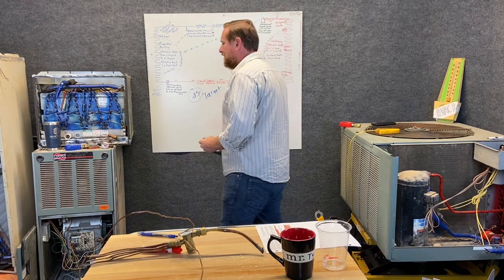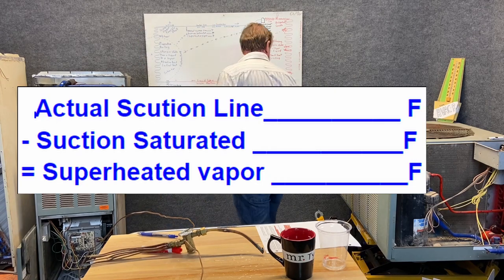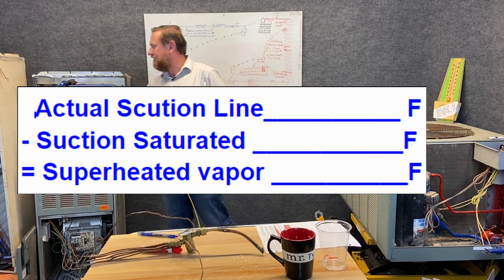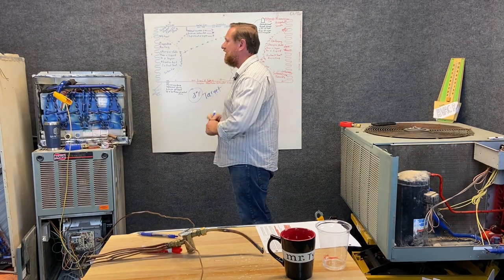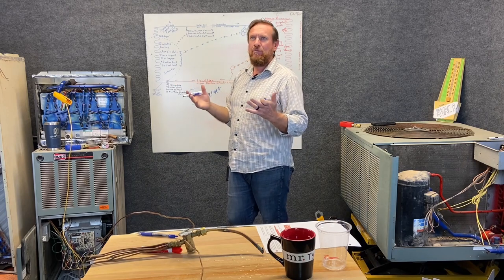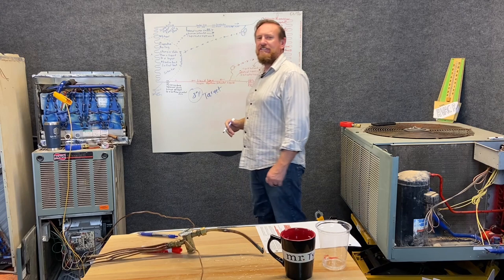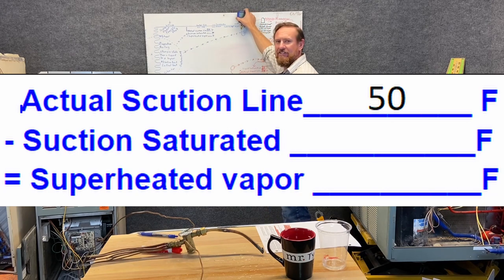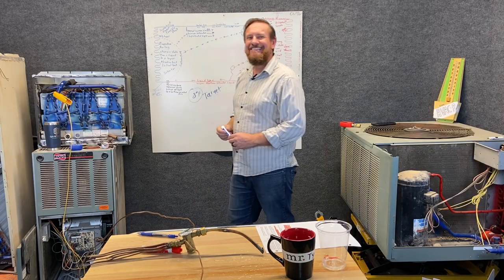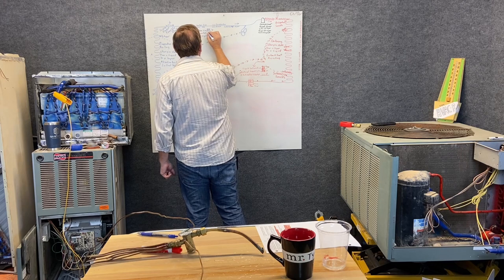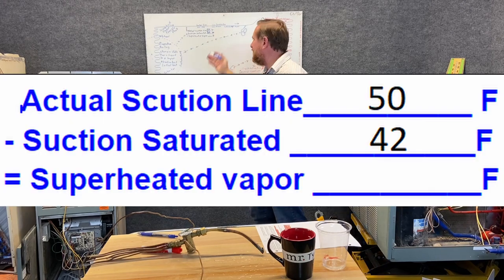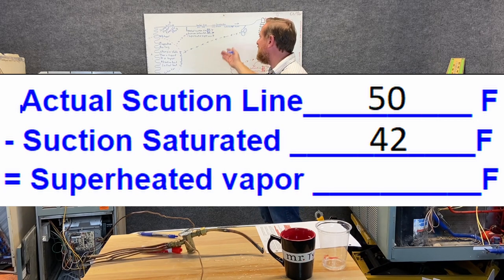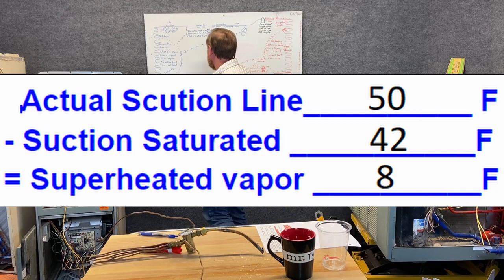So we're going to use our formula that we've used before. Our formula says our actual suction line temperature. So I put my thermometer on the suction line. I can put it right here in the suction line and get the actual suction line temperature. And let's say that temperature comes out to be 50 degrees Fahrenheit. Then we take our suction gauge, PSIG converted to saturated temperature. So we get that saturated temperature, we'll write that in our formula. So that number came out to be 42 degrees Fahrenheit. So 50 actual suction line temperature minus 42 suction saturated temperature gives us a superheated vapor of eight degrees Fahrenheit.